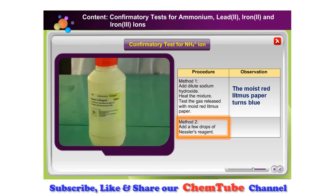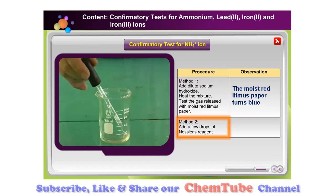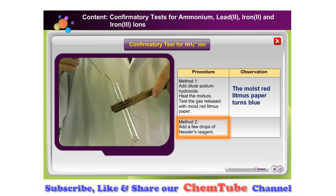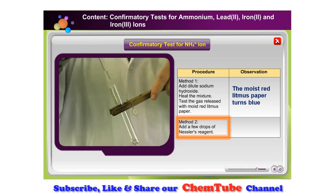The second method is as follows: to a solution containing ammonium ions, a few drops of Nessler's reagent is added.